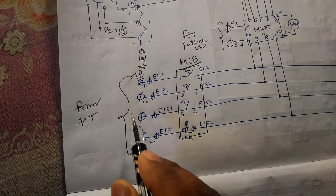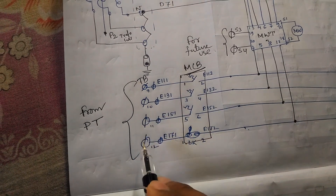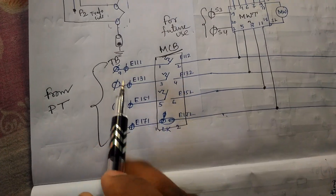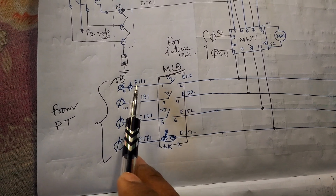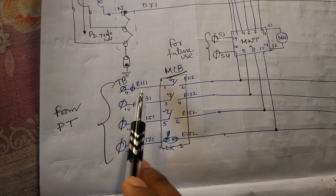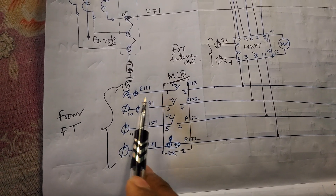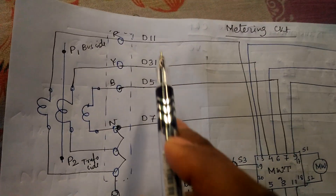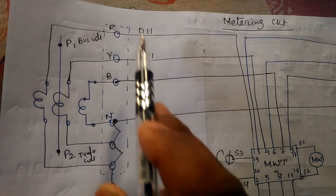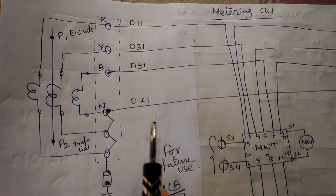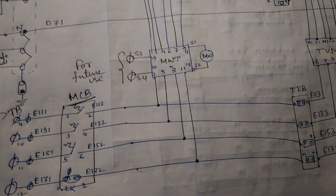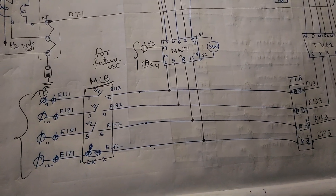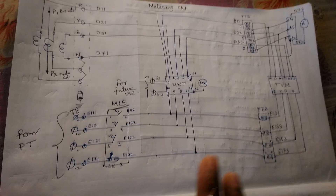We are using the 132 kV PT. The TB symbol represents the terminal box. In the terminal box, the symbol 'E' is used for the PT terminal, 'D' or 'C' is used for the CT terminal, and 'L' is used for the enunciator terminal. This completes the metering circuit.